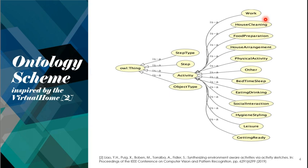There were more activities but they could not fit into the pictures shown. We also made additional classes to help this representation answer queries. These include the class 'Step', which contains the steps that are part of each activity; the class 'StepType', which contains the actions of each step; and the class 'ObjectType', which contains the objects that are part of each step.